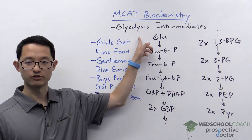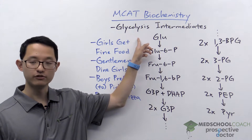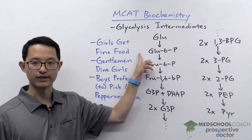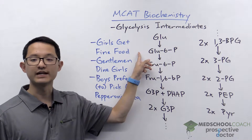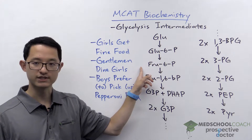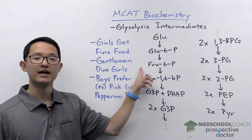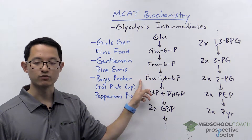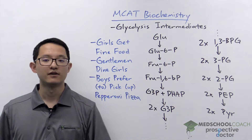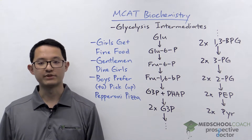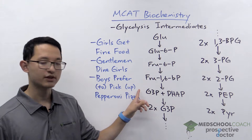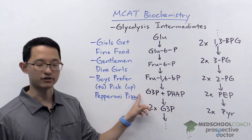First, you start with glucose. Glucose is phosphorylated to form glucose 6-phosphate, which is then isomerized to fructose 6-phosphate, which is phosphorylated again to form fructose 1,6-bisphosphate. Fructose 1,6-bisphosphate is then split into two 3-carbon sugars.